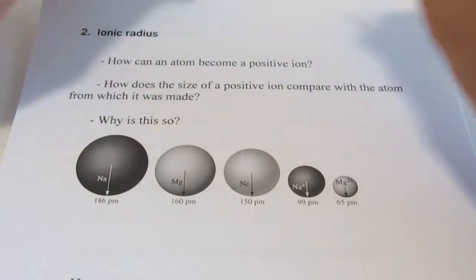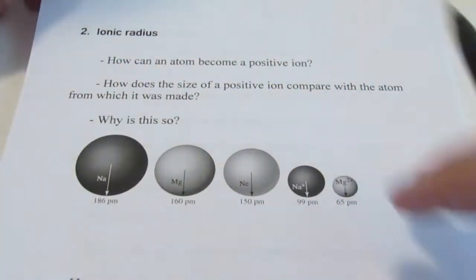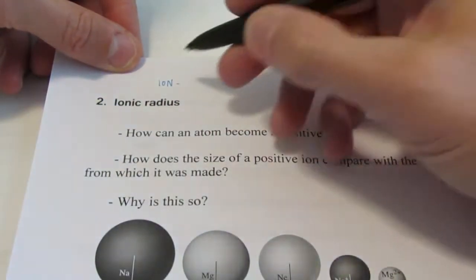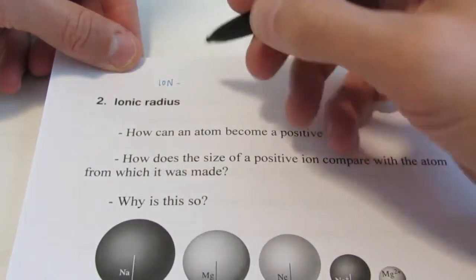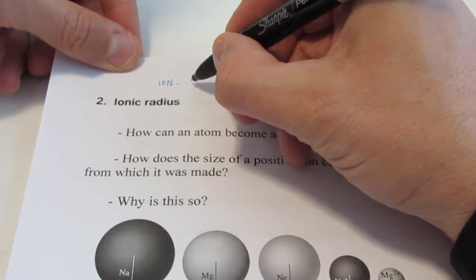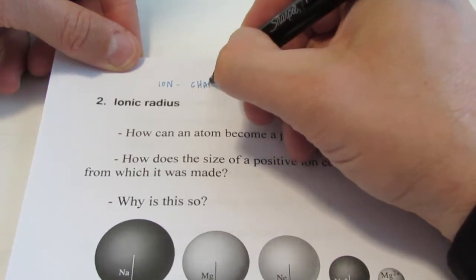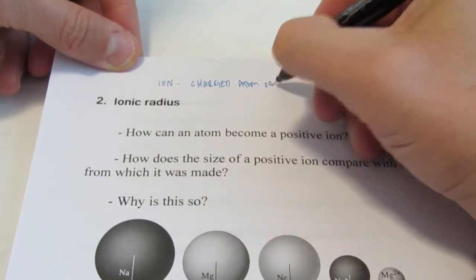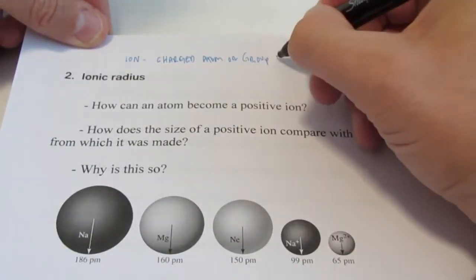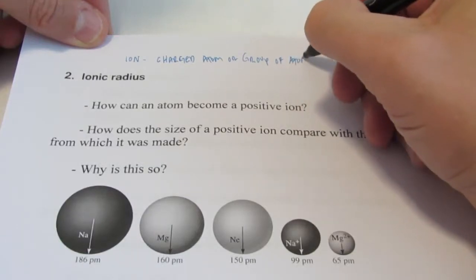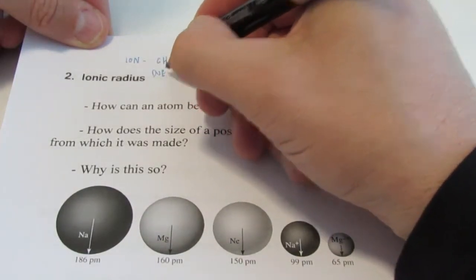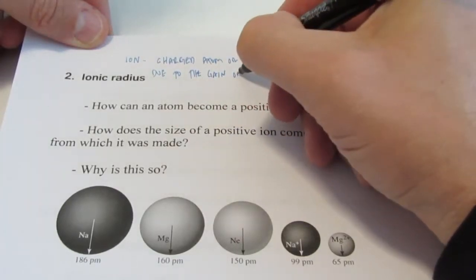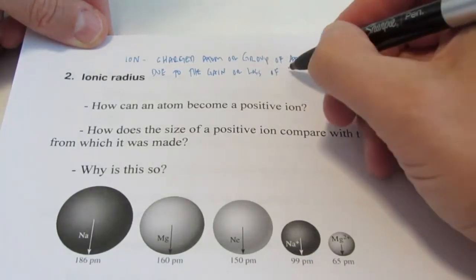Now we're going to talk about ionic radius. So we're going to define an ion first. An ion is a charged atom or group of atoms, and that's due to the gain or loss of electrons.